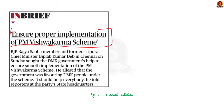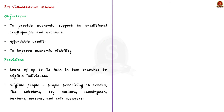Biplab Kumar Deb, a Rajya Sabha member and former Tripura Chief Minister, requests assistance from the Tamil Nadu government for the effective implementation of the Pradhan Mantri Vishwakarma scheme. In our discussion, we will discuss about PM Vishwakarma scheme. The scheme aims to provide economic support to traditional craftspersons and artisans by providing them affordable credit, improving their economic viability.